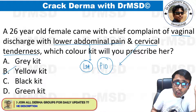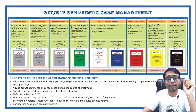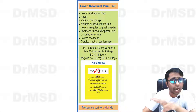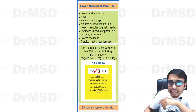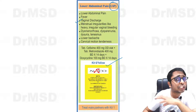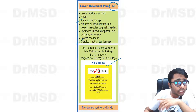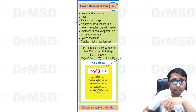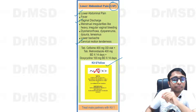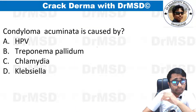For pelvic inflammatory disease, we have to give kit number 6, which is the illo kit. This is kit number 6 used for lower abdominal pain — the patient can also have vaginal discharge and cervical motion tenderness. So in this case we give kit number 6.